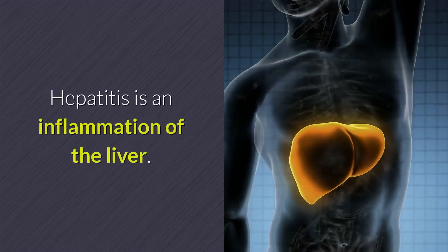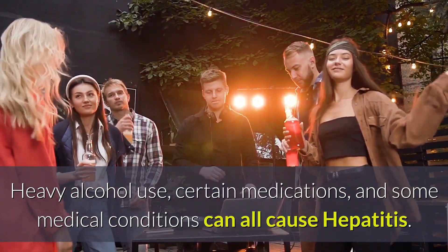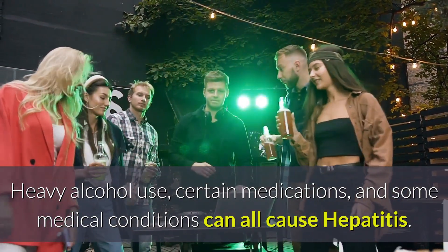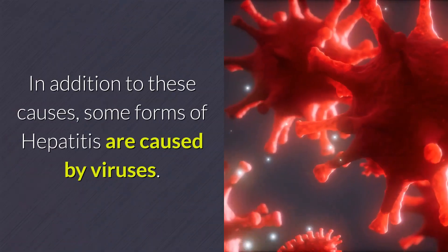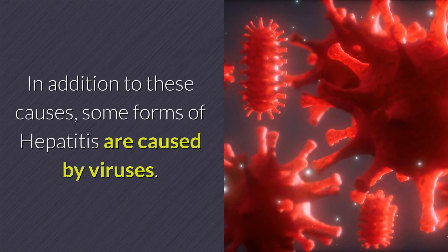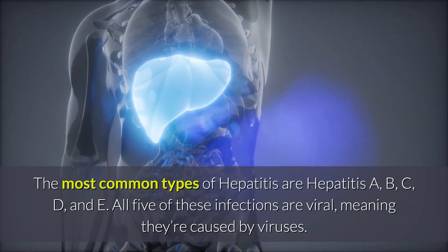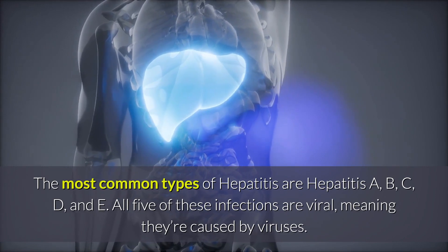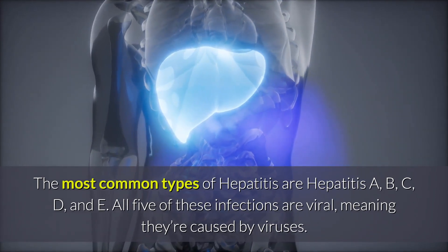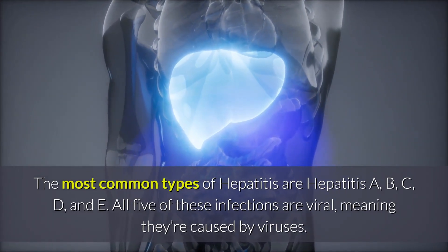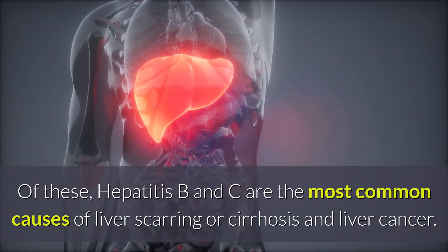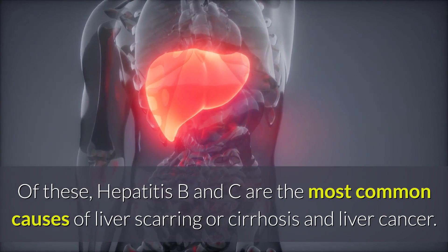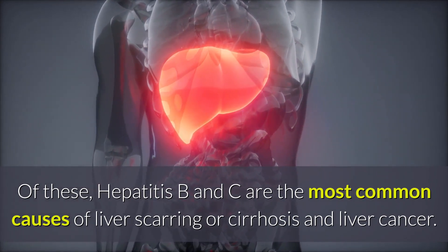Hepatitis is an inflammation of the liver. Heavy alcohol use, certain medications, and some medical conditions can all cause Hepatitis. Some forms of Hepatitis are caused by viruses. The most common types are Hepatitis A, B, C, D, and E — all viral infections. Of these, Hepatitis B and C are the most common causes of liver scarring, or cirrhosis, and liver cancer.